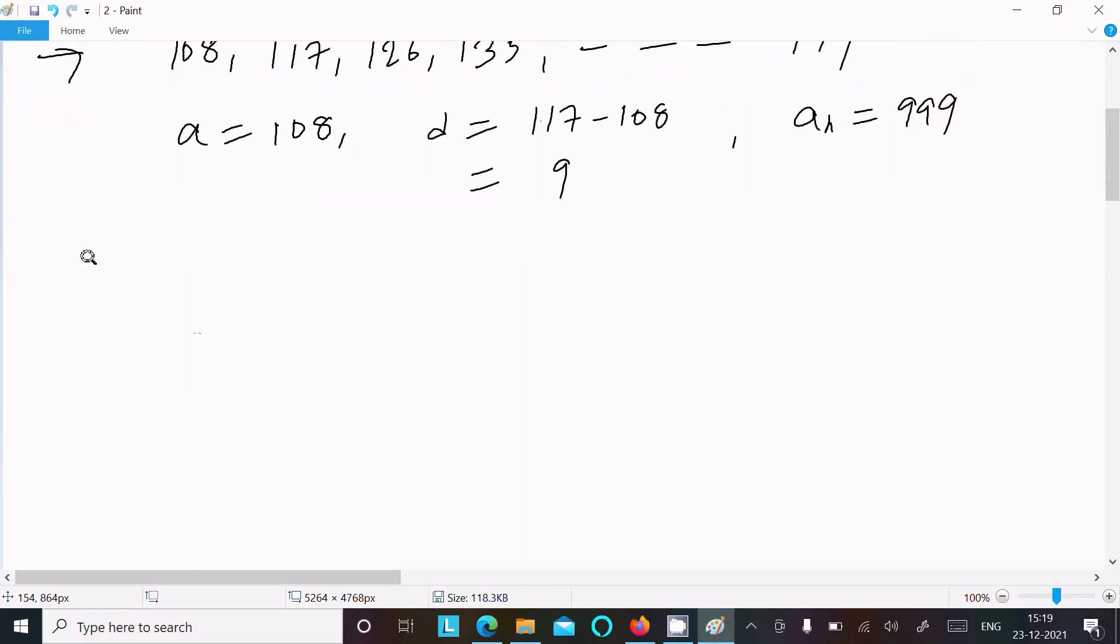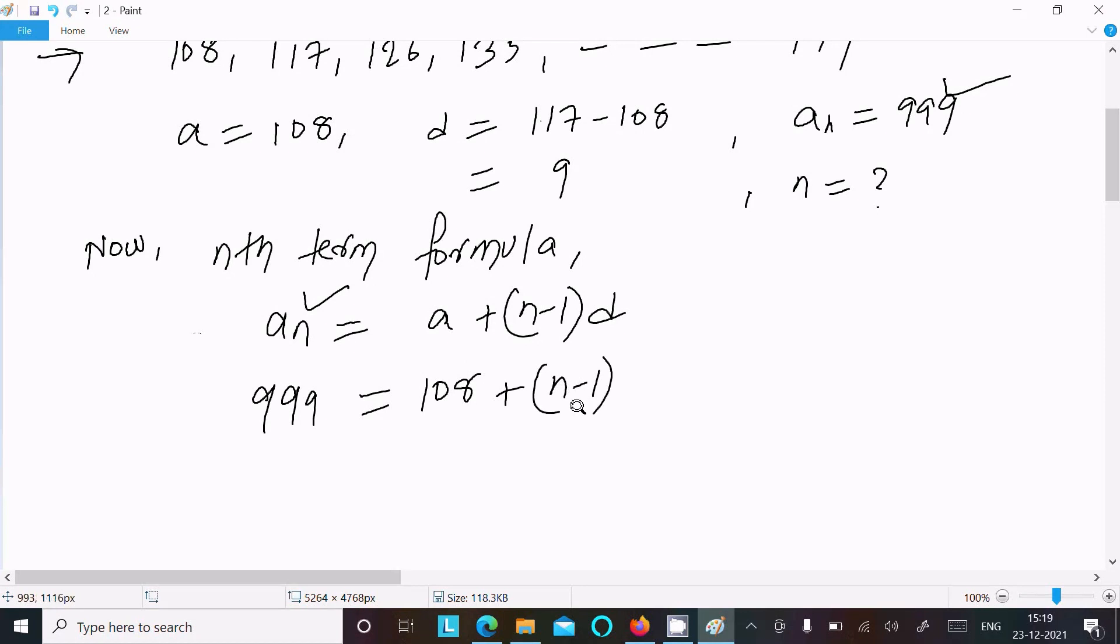The last term, the nth term, is 999. Now using the nth term formula: a_n = a + (n-1)d. We need to find n. The nth term is 999, first term is 108.